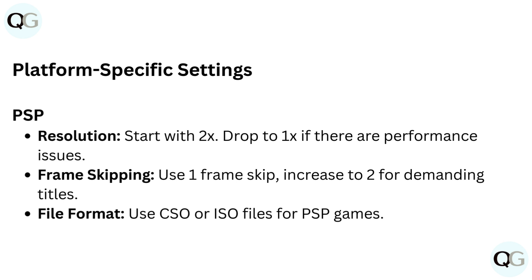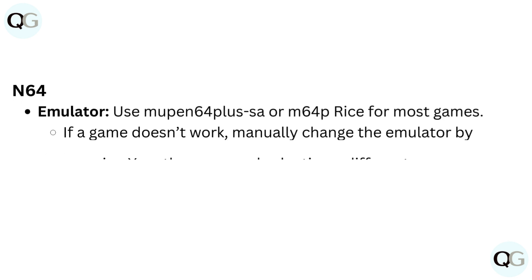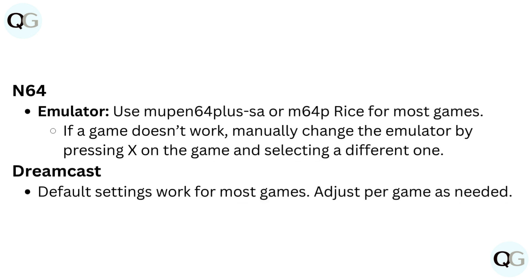For frame skipping on PSP, use one frame skip and increase to 2 for demanding titles. For file format, use CSO or ISO files for PSP games.